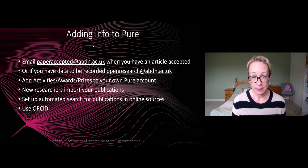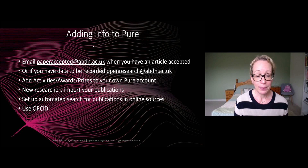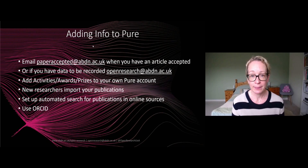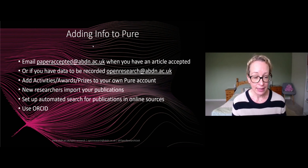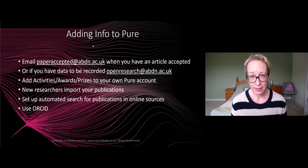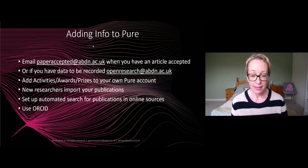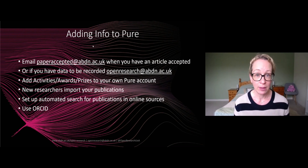New researchers can import publications into Pure — if you have an Excel file from your previous institution, we can upload that for you. Everyone can set up an automated search for publications from bibliographic databases like Scopus or Web of Science. Just go into your Pure profile; all academic staff and postgraduate researchers have access using their university user ID and password. Switch on the searches and it will regularly pull in anything linked to your profile that's not already in Pure.